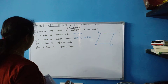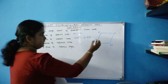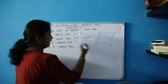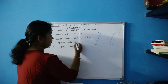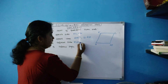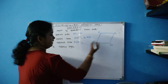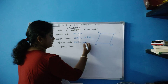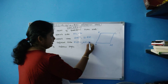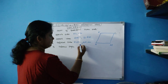Now two pairs of adjacent sides. What are adjacent sides? KL and KN is one adjacent pair, and NM and LM is another adjacent pair. NM and ML is another adjacent side.